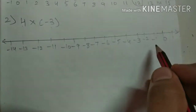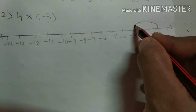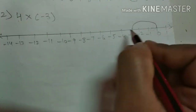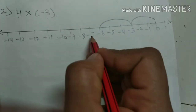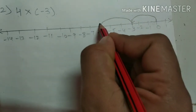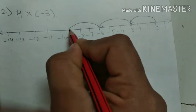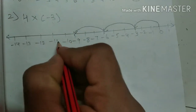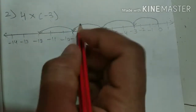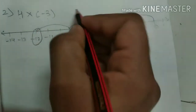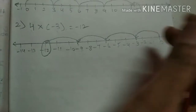We make four jumps of three steps from zero, but this time to the left side of the number line. Zero to minus three — one, two, three. Then minus three to minus six — one, two, three. Then to minus nine, then to minus twelve. So the answer is minus 12.